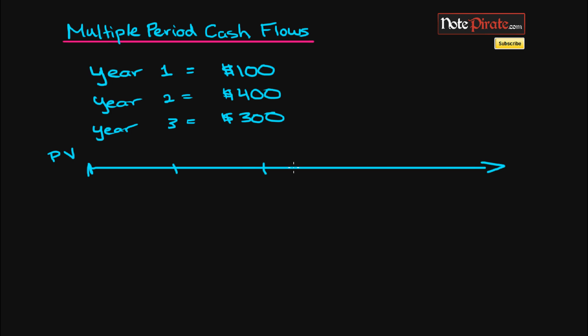We're going to make three tick marks because we're receiving the cash in different years. The first year is $100, the second is $400, and the third is $300.